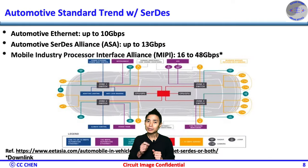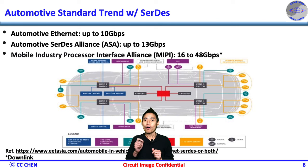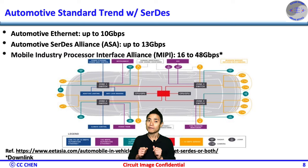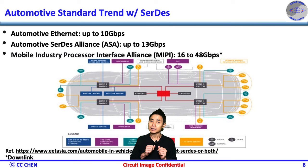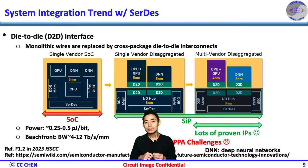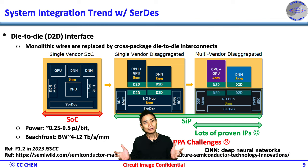Another recent popular application of data transmission is the automotive industry, driven by the demand of safety assistance and self-driving. Lots of data must be exchanged and processed. Therefore, the speed requirements have increased to 10 Gbps in automotive Ethernet, 13 Gbps in A-PHY, and 48 Gbps in MIPI. Besides imaging applications, the data requirements are increasing, as are the number of functionalities. Therefore, the chip size of the SoC would become bigger and bigger, which is a challenge for manufacturing.